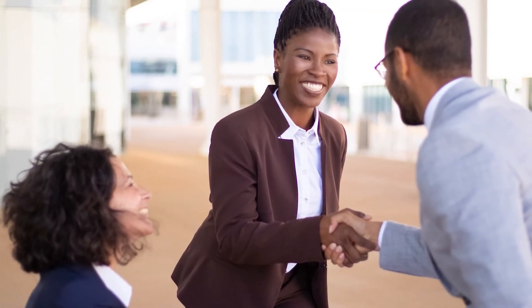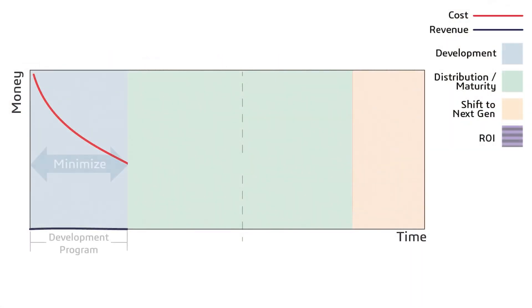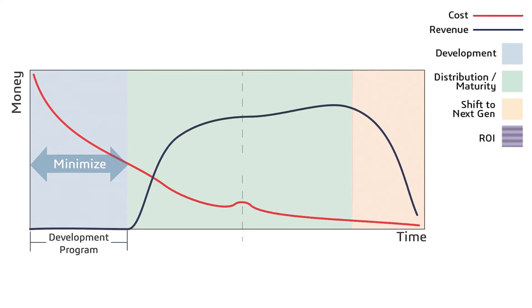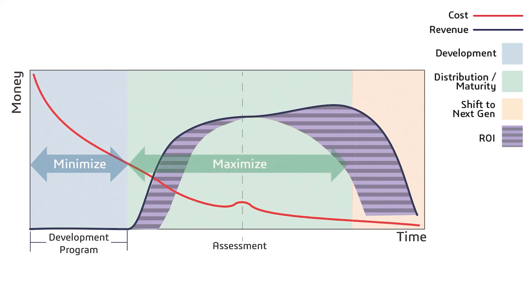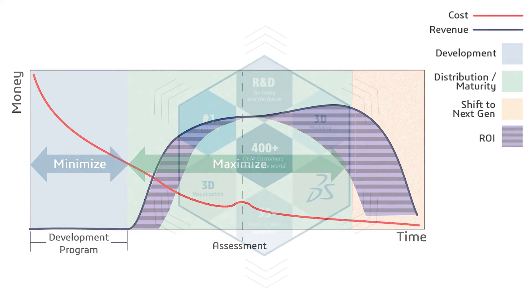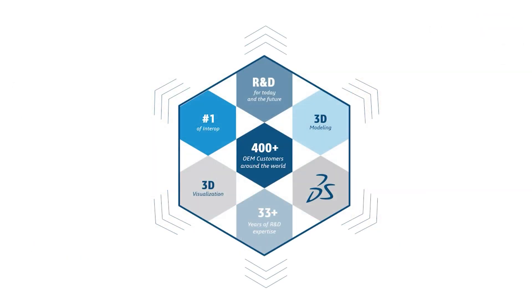ALM creates a long-standing relationship between application developers and solution providers based on continuous exchange, alignment, and trust. When engaged in this partnership, application developers can be assured that their 3D interoperability and 3D modeling technology is implemented in a robust and performant manner. In this model, even more value is provided over the lifecycle of an application, so when the application finally enters maturity, the organization knows they have done everything they can to innovate the product and can confidently move to the next generation.